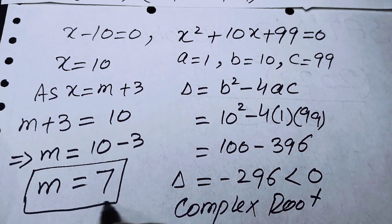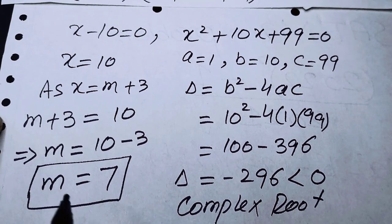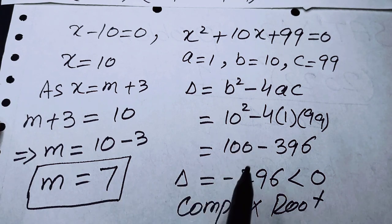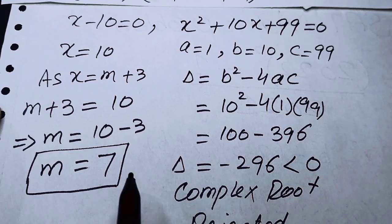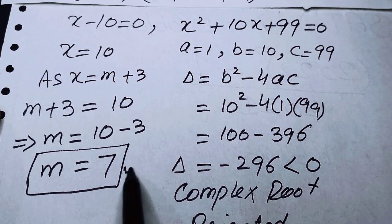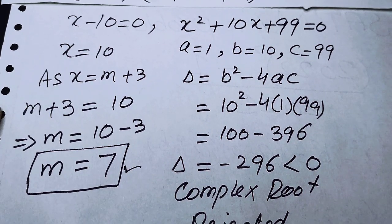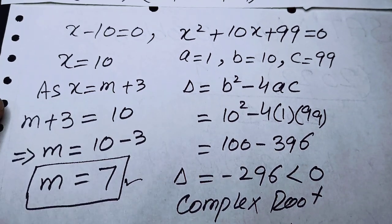So the only real root is m equals 7, and the complex roots are neglected. This is our final answer. Thank you for watching — please subscribe for more exciting videos.